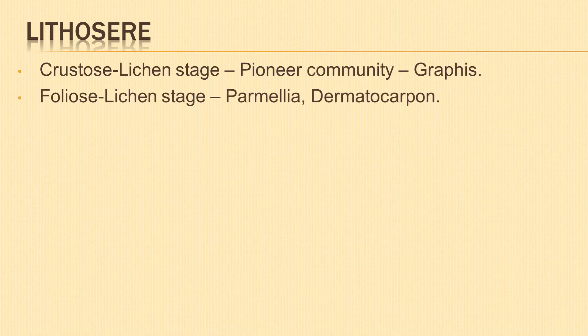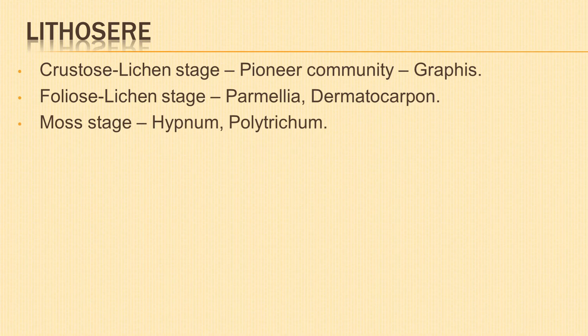Foliose lichens like Parmelia and Dermatocarpon retain more water, accumulate dust particles, and help in the development of a soil layer on the rock surface. This favours the growth of mosses, which grow extensively — for example Polytrichum. Their death and decomposition add minerals, more soil, and organic matter, increasing the thickness of soil, its fertility, and water-holding capacity.